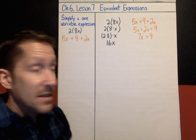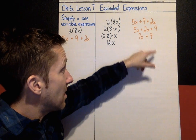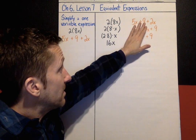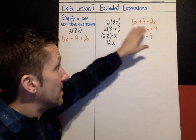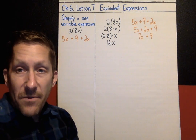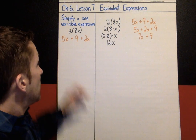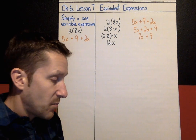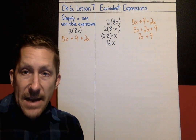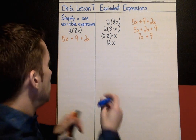A common mistake students make is wanting to combine the 7 and the 9 to call it 16x. You cannot do that — constants cannot be combined with a term that has a variable. If we were modeling, those would be fries and nuggets; they can't be combined. Now let's look at examples where we have two variables — simplifying two-variable expressions.